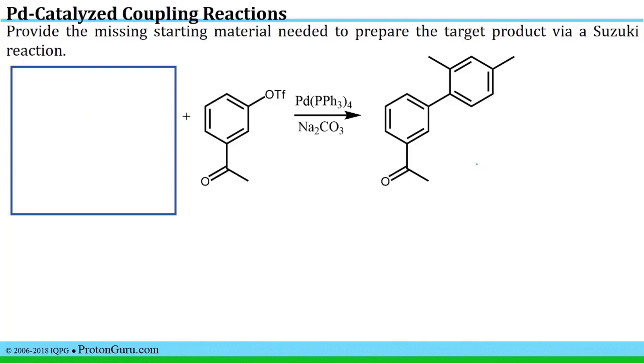Another way that you could encounter these types of palladium-catalyzed coupling reactions would be trying to fill in starting materials for a particular product. In this case, we're provided one of the coupling partners and asked to produce this given product and specifically asked to use a Suzuki coupling reaction.